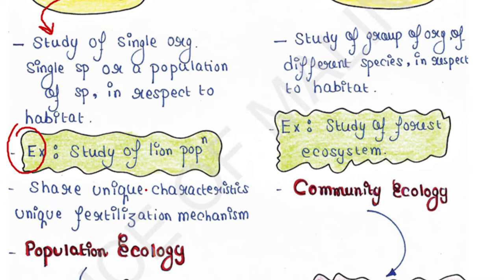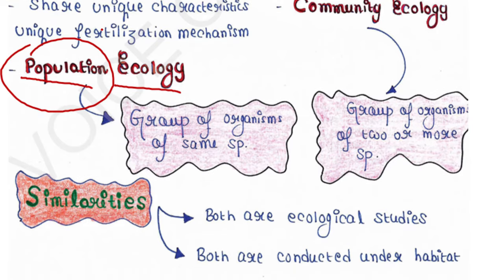All organisms of a single species share unique characteristics during the recognition of potential mates; they all share unique fertilization mechanisms that differ from all other species. Autecology is also termed as population ecology. A population is a group of organisms of the same species interacting and interbreeding together in the same geographical area at the same time.